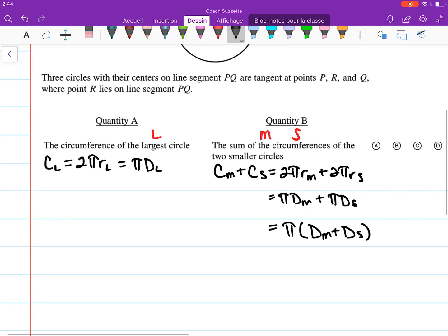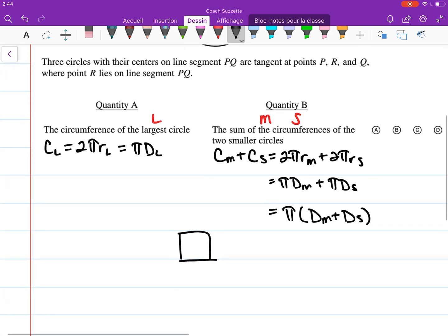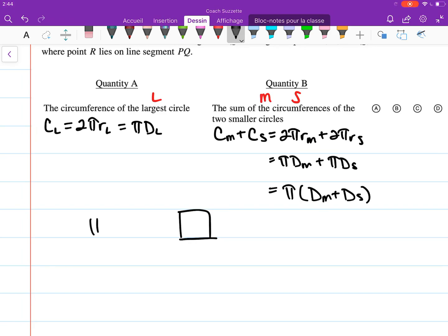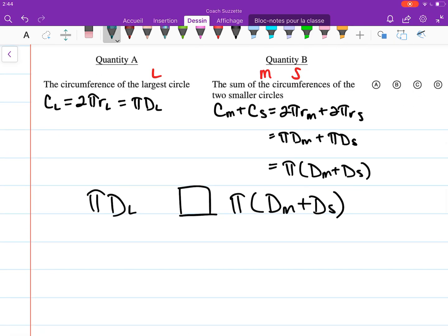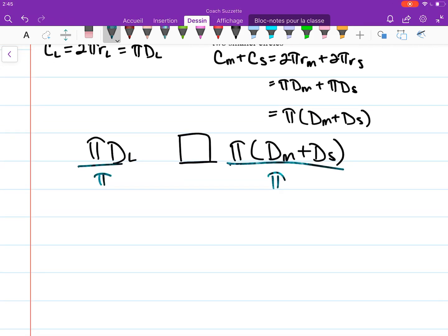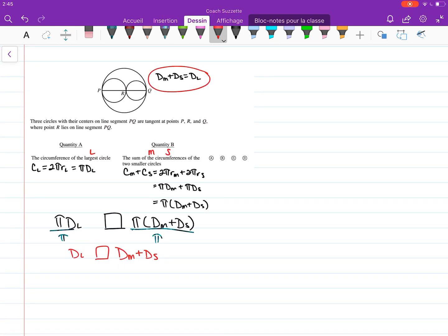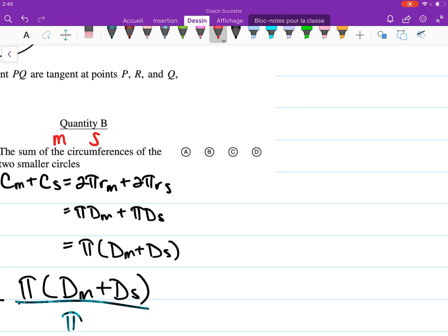How can we use that here? If we divide both sides by π, which is a non-negative number, the equality or inequality is preserved. Then we have the diameter of the large circle compared to the diameter of the medium circle plus the diameter of the small circle. We know that's equivalent, so quantities A and B are equal. And we're done.